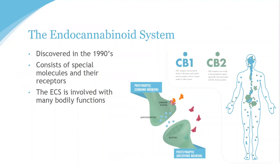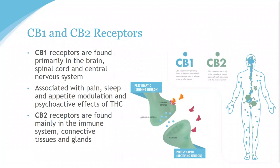There are two main types of cannabinoid receptors: CB1 and CB2. CB1 receptors are most concentrated in cells of the brain, spinal cord, and central nervous system, but are found in lesser density elsewhere. CB1 receptors are associated with responses in memory and pain processing, and researchers believe they may also be related to sleep and appetite modulation. A major trait of CB1 receptors is that they are the lock for the anandamide key — the endocannabinoid made inside our bodies. The psychoactive phytocannabinoid THC fits this lock, creating the feeling of being high.